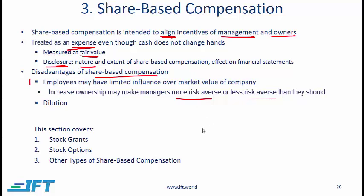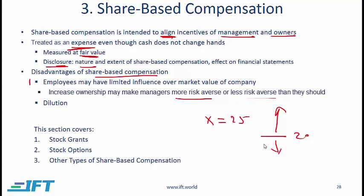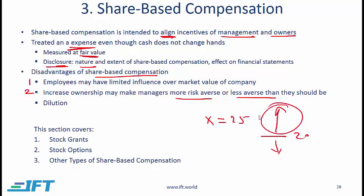Let's say that employees get stock options with an exercise price of 25 and the current company stock price is 20. For the employees to make money on the stock options, the value of the stock must go up above 25. If that happens, the employees benefit. On the other hand, if the stock goes down, there is nothing to lose. So given that options have a one-sided payoff, there is an incentive to take extra risk so that these options are in the money.